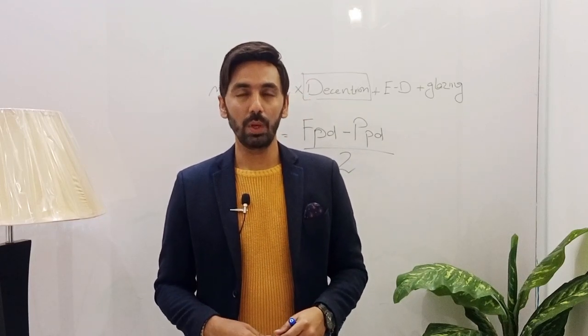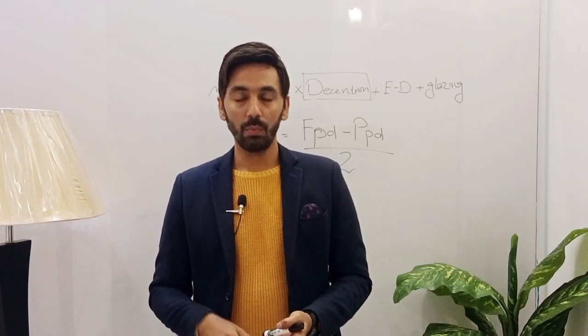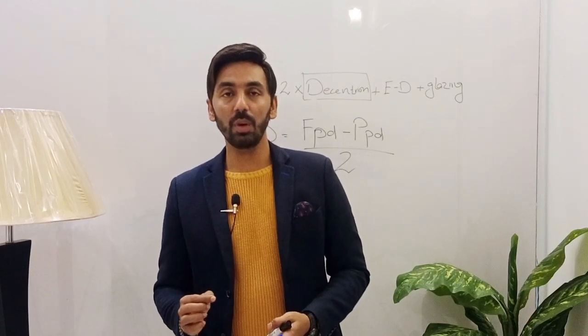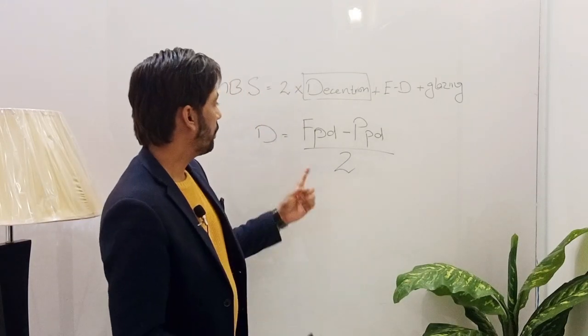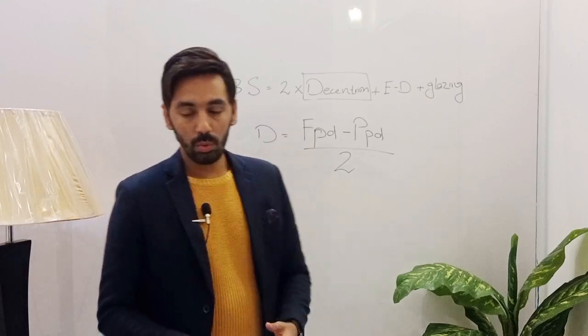In the next video we will have a detailed explanation of how to measure and mark the perfect IPD of the patient. For now, the distance between the two pupils of the patient is called the IPD — the interpupillary distance — and that is called the patient's PD. Now, what is frame PD?